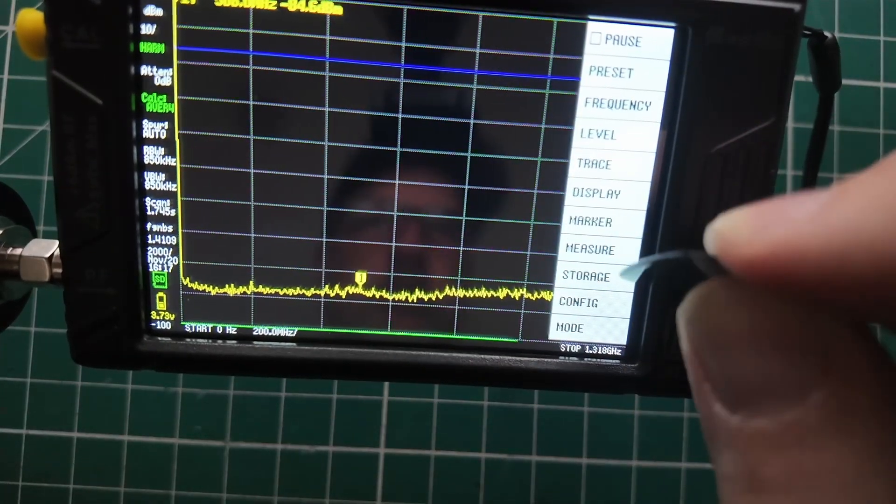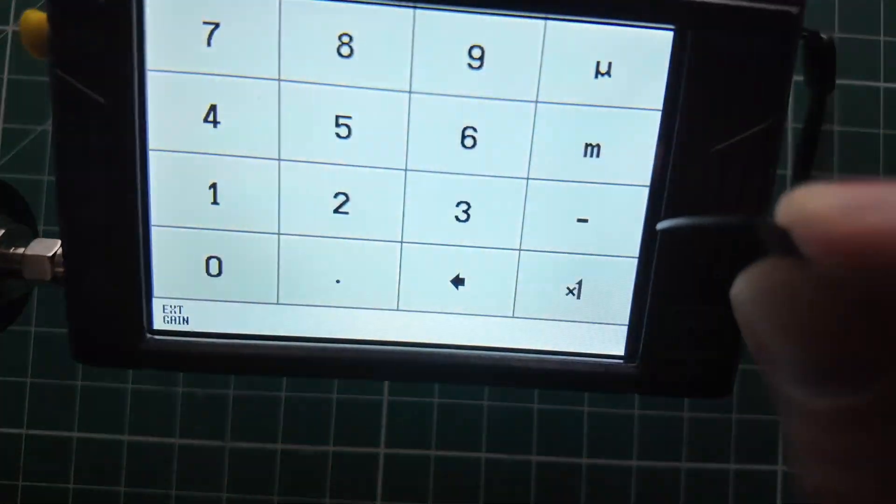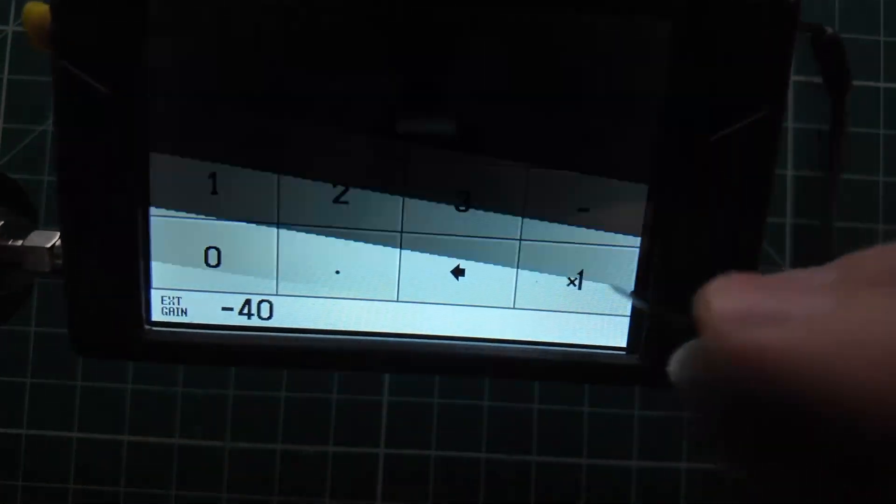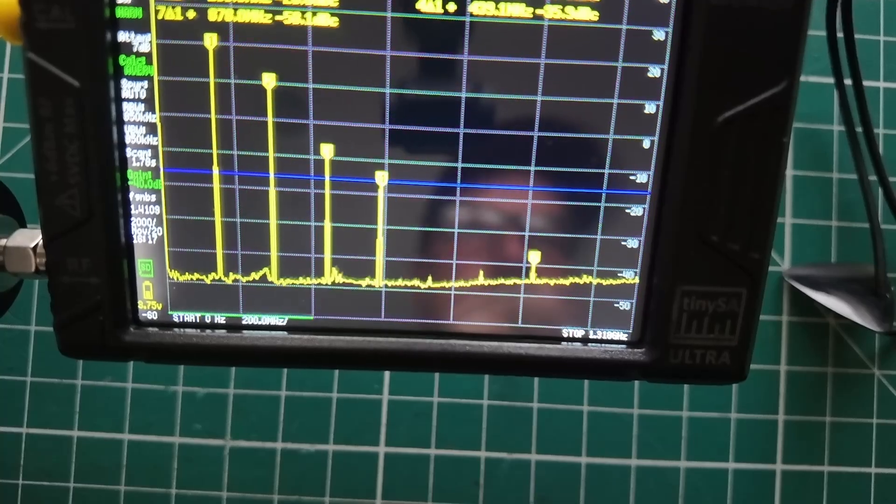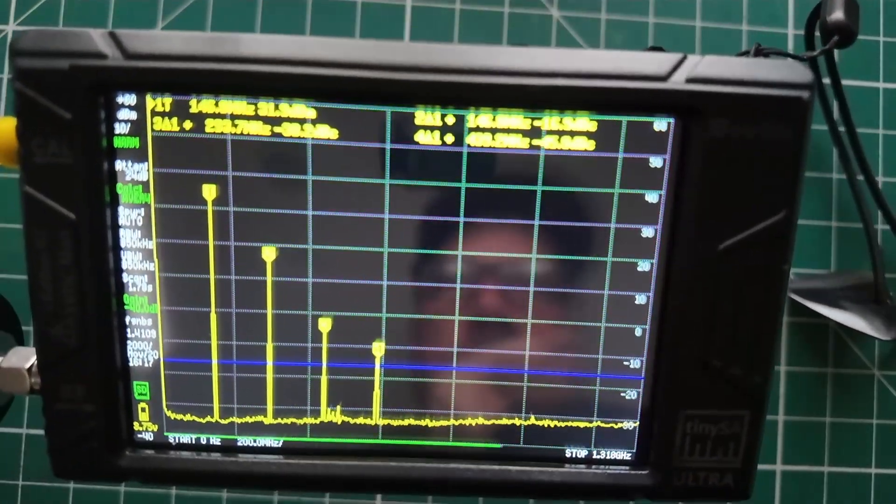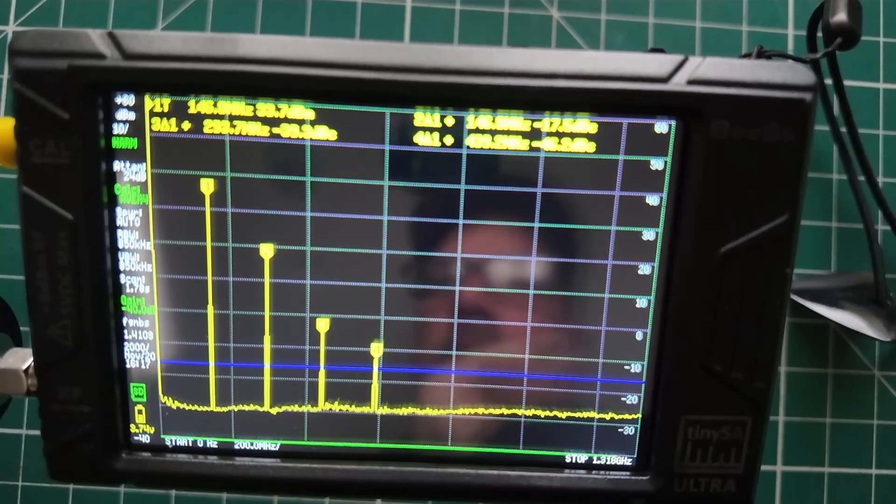Let's account for our external attenuator by doing level external gain of minus 40. And then when we key down, these numbers here should start to make a little bit of sense after a minute. Yeah, she is not looking good at all. That's plenty of time for it to have calmed itself down. Not good.